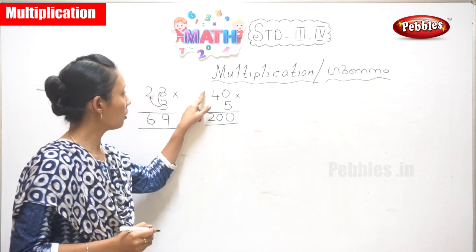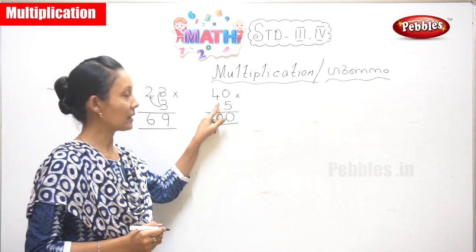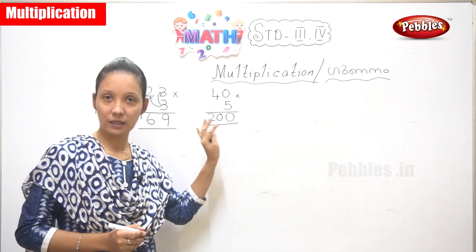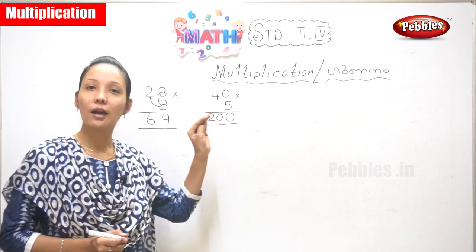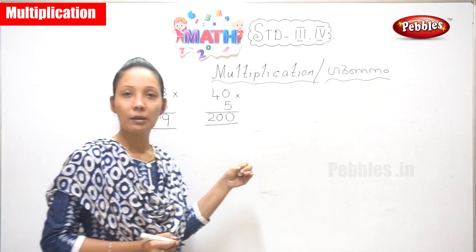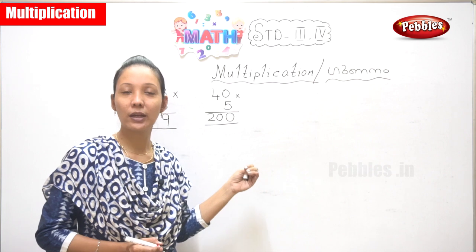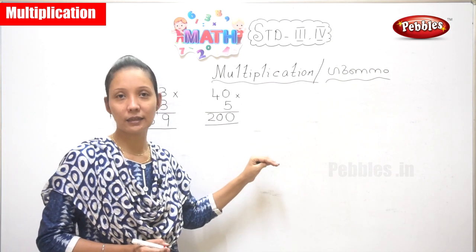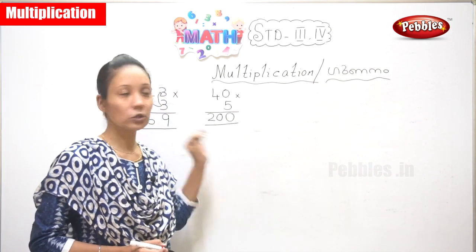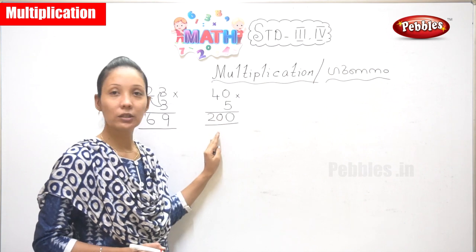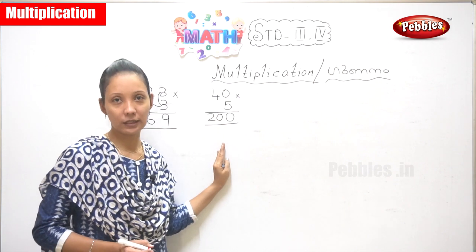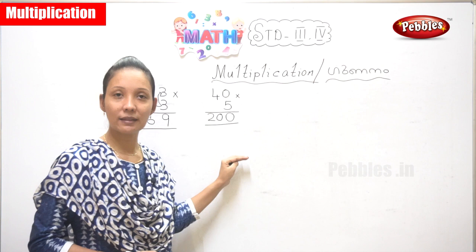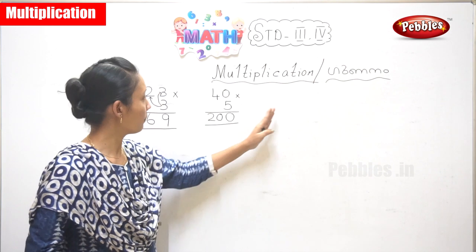Now children, if you do not know the tables directly, you can count. You can say the 4 table: 4, 8, 12, 16, 20. So you can even recite your tables and then find out your answer. Okay.